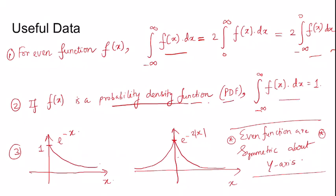If f(x) is a probability density function (PDF), then integration minus infinity to infinity f(x) dx will be one. The graph of e^(-x) is monotonically decreasing. As x tends to infinity, e^(-x) tends to zero.